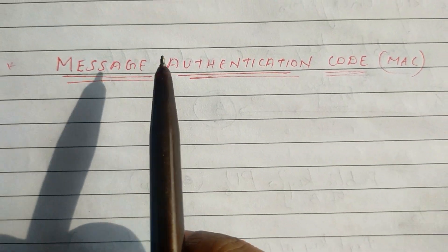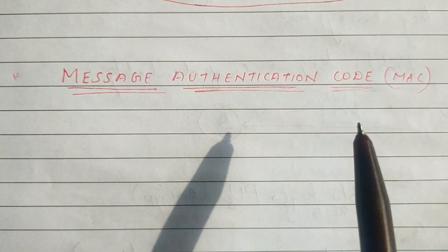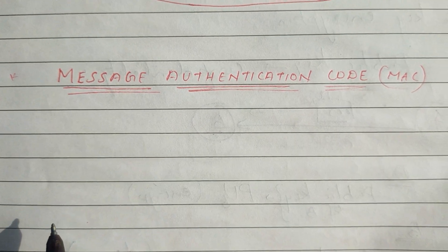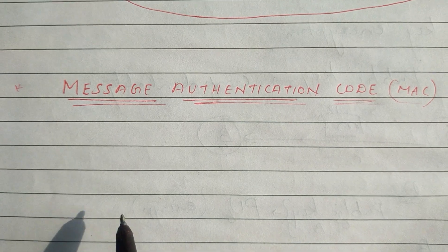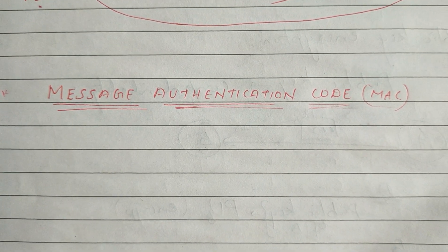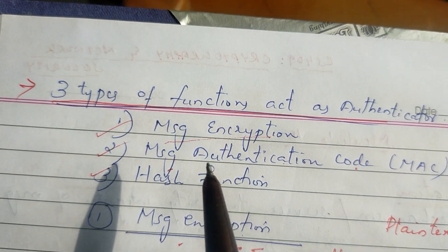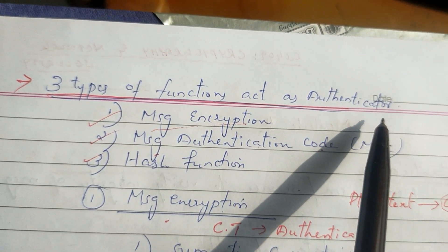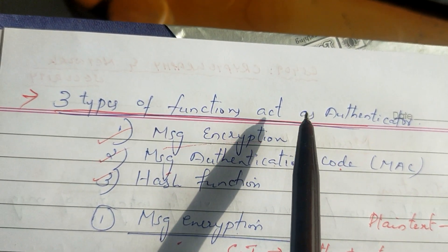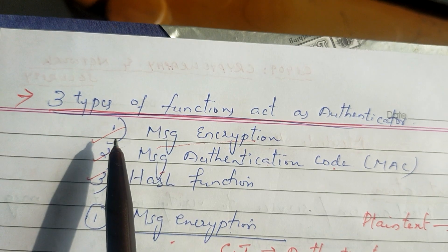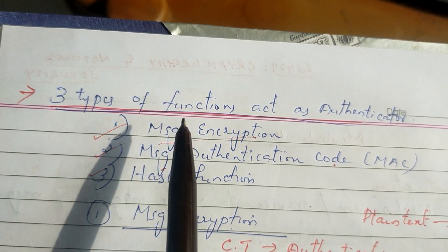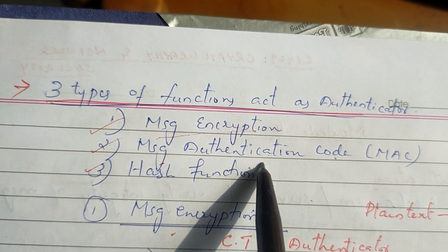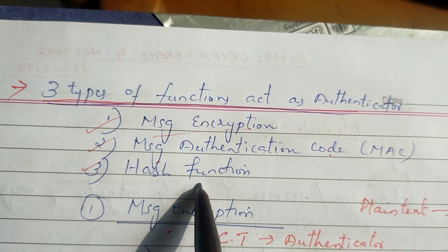Next is Message Authentication Code — MAC. In the last class, we covered authentication. An authenticator has three functions: Encryption, MAC, and Hash function.